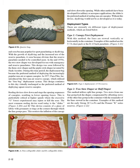Reefing devices slowed down and staged the opening sequences of canopies, resulting in lower opening forces—particularly critical at higher speeds where excessive G-forces may injure or kill the user. The most common reefing device used today is the slider, which consists of a piece of fabric with grommets or rings at the corners through which the line groups pass, restricting the inflation of the canopy and slowing down the opening. While other methods have been developed for military or aerospace applications, the slider is the preferred method of reefing ram air canopies. Without this device, skydiving would not be as developed as it is today.